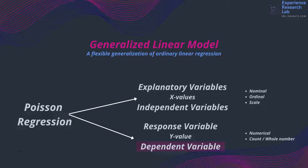Poisson regression assumes the response or dependent variable Y has a Poisson distribution, and a linear combination of unknown parameters can model the logarithm of its expected value.